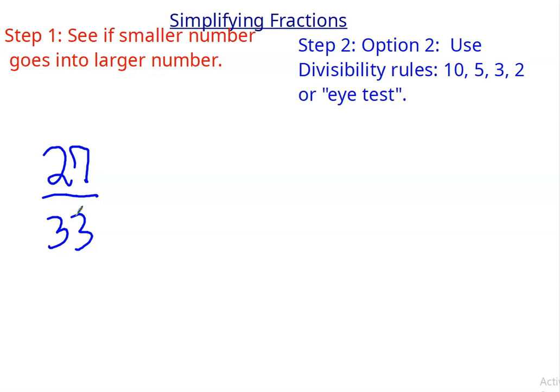Does the 3 rule work? Well, the 3 rule says if you add the digits for each number and they're divisible by 3, then the whole number is divisible by 3.